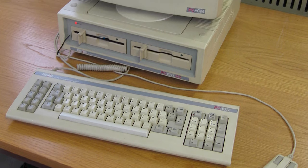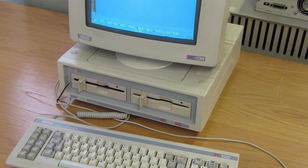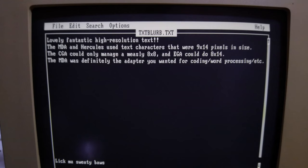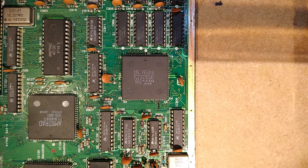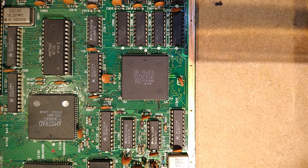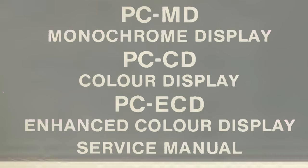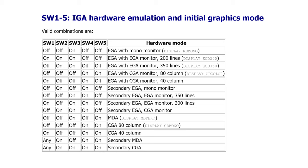The earlier Amstrad PC 1512 model was available with either a monochrome monitor or a colour one, but no matter which model you chose, the graphics card always emulated an IBM colour graphics adapter or CGA. This means the higher resolution text from the IBM monochrome display adapter or MDA wasn't available on the 1512. However, thanks to the inclusion of a graphics chipset from Paradise Systems, the PC 1640 was available with a much wider variety of display options — standard CGA, a monochrome monitor supporting IBM MDA, and even an enhanced colour model supporting IBM EGA display modes. No matter which monitor you bought, the base unit was capable of being switched between any of these modes. In this video I'm going to investigate how some of these modes work and find software that takes advantage of them.